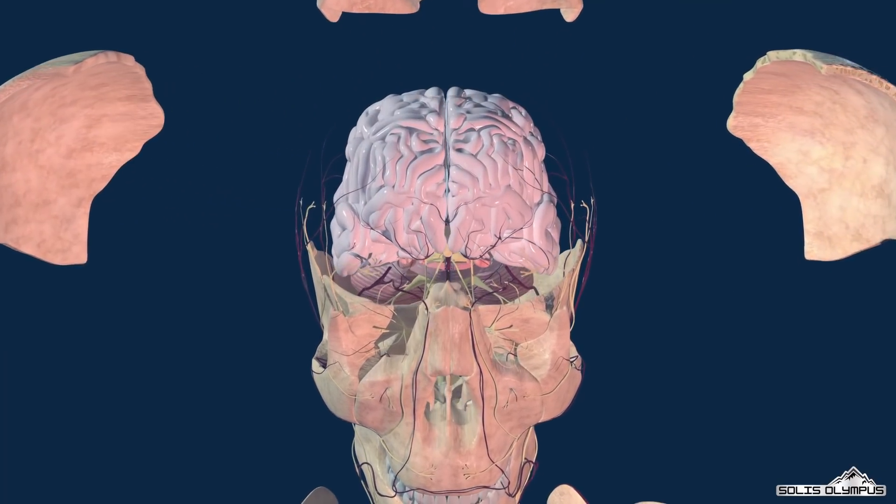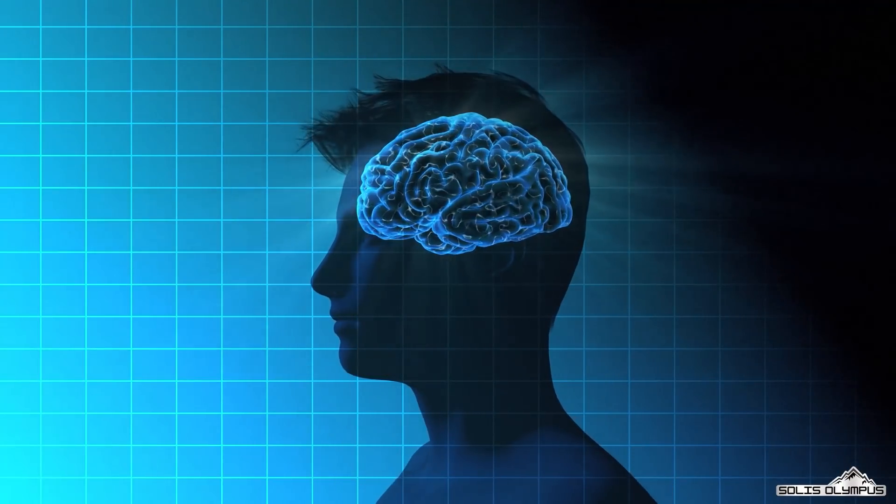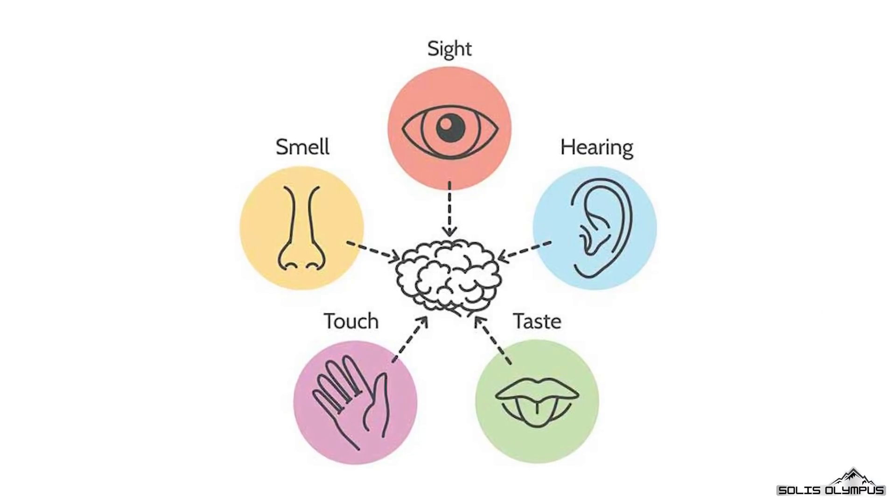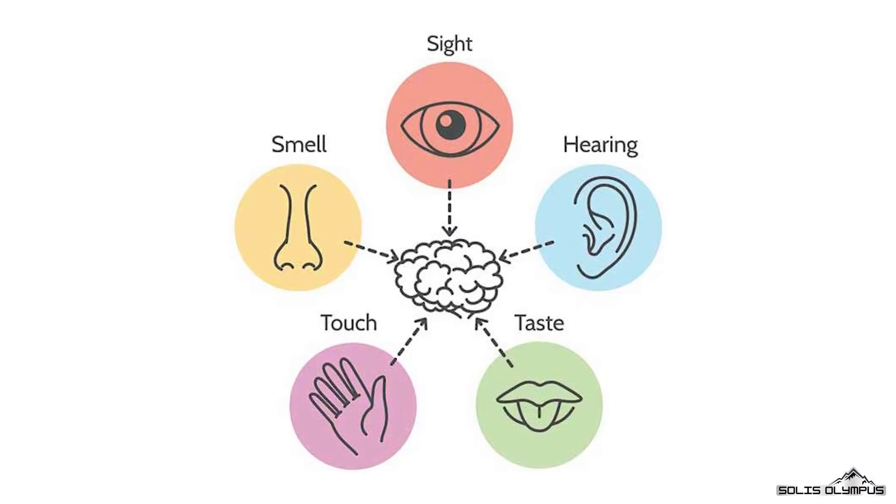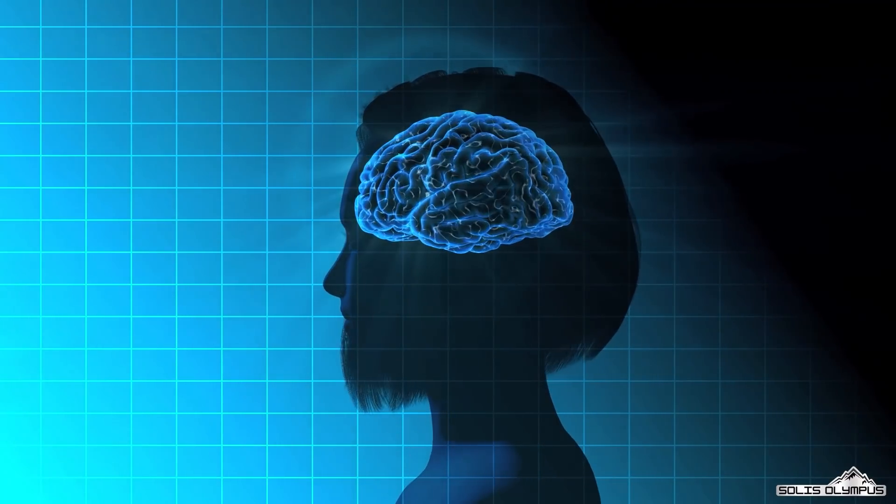The human brain is a complex organ located within the skull. It controls all functions of the body by interpreting information which receives through our five senses: sight, smell, touch, taste, and hearing. It assembles the information in a way that has meaning for us.